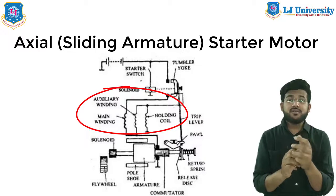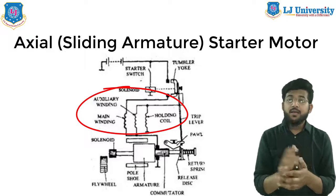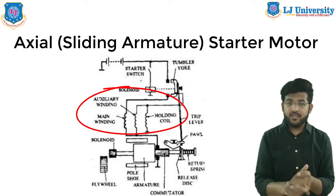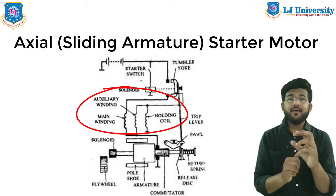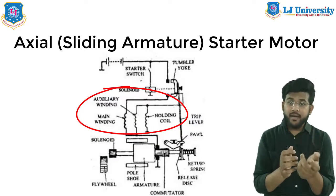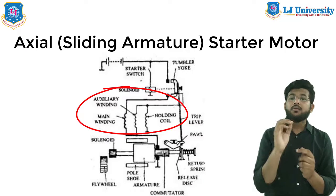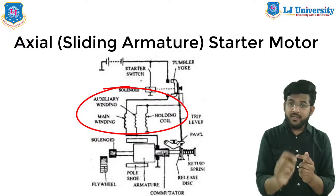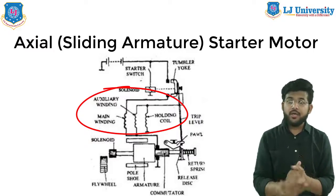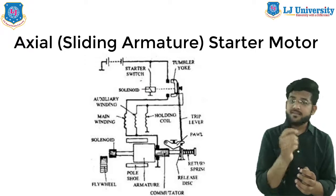The electrical circuit of this starter motor uses three field windings. The main winding is of thick section and low resistance, connected in series to the armature. The auxiliary winding is wound with thinner wire so it has relatively high resistance and is connected in series with the armature but in parallel with the main winding. The holding winding is also a high resistance winding connected in parallel with the armature as well as the other two windings.